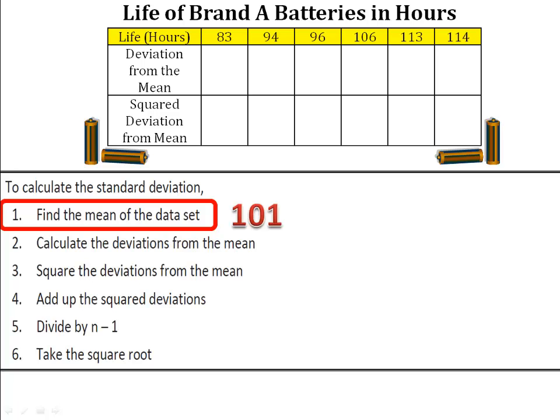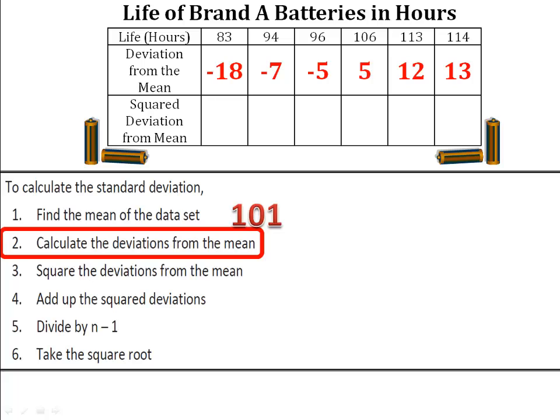Our second step is to calculate the deviations from the mean. We learned in our last video that if we take the mean, 101, minus the life of the battery, 83, 94, etc., that we can calculate the deviations from the mean for each data point. When I subtract each of them from the data point, we get negative 18, negative 7, negative 5, 5, 12, and 13. Remember, a negative deviation from the mean means that that life of the battery was less than average. A positive deviation from the mean means that the life of that battery was greater than average.